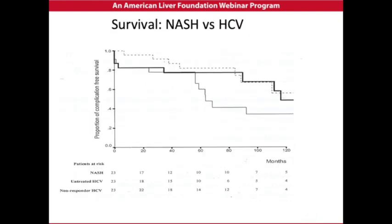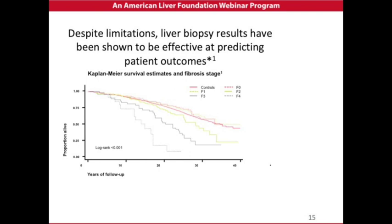Survival with NASH is actually significantly reduced. This slide compares more commonly understood hepatitis C and its mortality over 10 years, and you can see that the two lines — the dashed line and the thin line — for different groups of hepatitis C patients have the same mortality as patients with steatohepatitis, the heavy line. This is a significant health problem. Biopsy is the best way to identify this condition, and the biopsy results conform very well with predicting how the patient is going to survive.